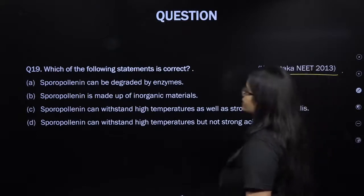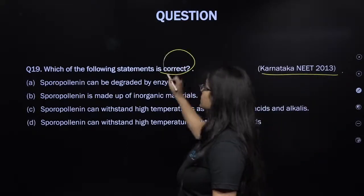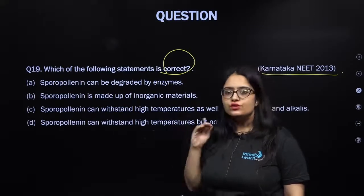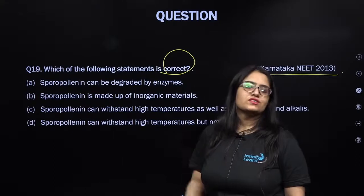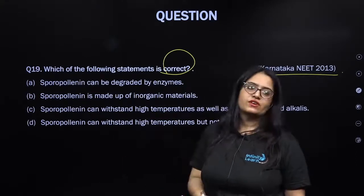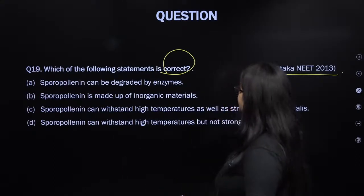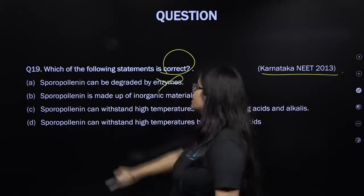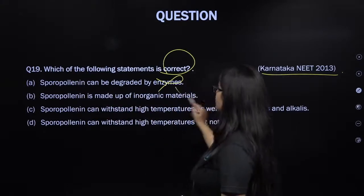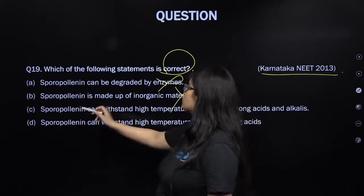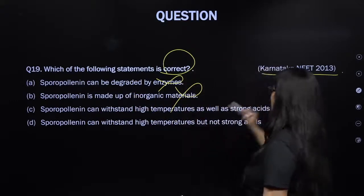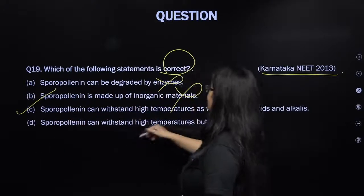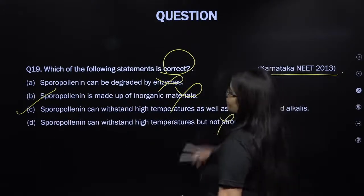From Karnataka NEET 2013: sporopollenin can withstand high temperature as well as strong alkali and acid — that is absolutely correct. Sporopollenin cannot be degraded by any enzyme, and it is made up of organic material, not inorganic material.